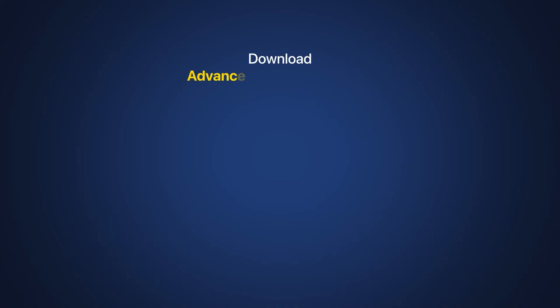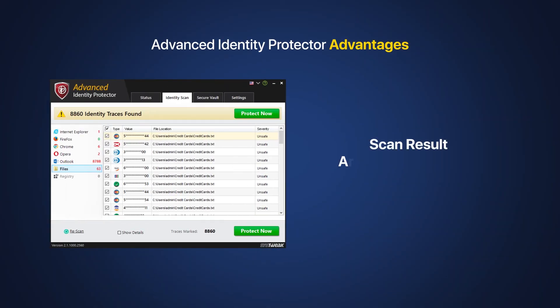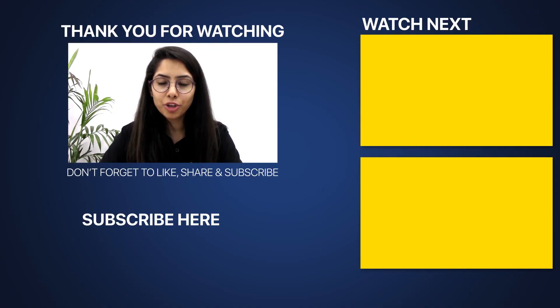Download Advanced Identity Protector today and stay safe from identity theft. The scanned results are neatly organized in different categories to make your work simple. Once moved to the secure vault, the information is encrypted and is accessible only by the password that you know. Get it today, sit back, and browse stress free. Your awareness and installation of AIP is the key to protected data. Thank you for watching.